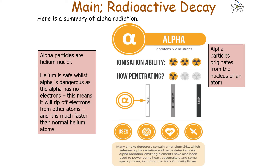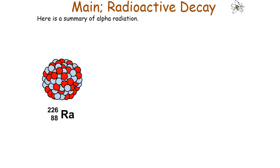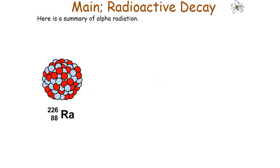Alpha radiation has a high ionizing ability but a low penetration and is stopped by paper. Alpha particles are just helium nuclei. Helium is safe while alpha is dangerous, as the alpha particle has no electrons — it has a positive charge — so it will rip electrons from other atoms. Plus, it travels a lot faster than a normal helium atom. This radiation comes from the nucleus of an atom. Here's an animation showing alpha radiation where the alpha particle is emitted and we have a smaller, more stable nucleus left behind — a very important concept.